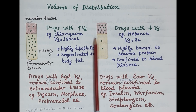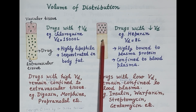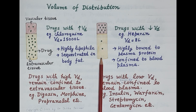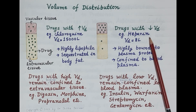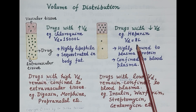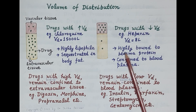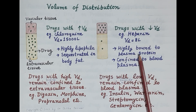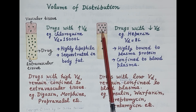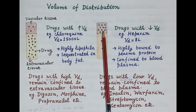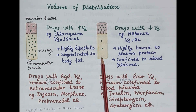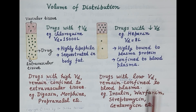In contrast, this figure shows a drug largely confined to the blood plasma with little drug in the extravascular tissue — this drug has a low volume of distribution. An example is heparin, with a volume of distribution of 8 liters. Heparin has a low volume of distribution because it is highly bound to plasma proteins, so it remains largely confined to the blood plasma and is not widely distributed in extravascular tissues. Drugs with low volume of distribution remain largely confined to the blood plasma — for example, insulin, warfarin, streptomycin, and gentamicin.